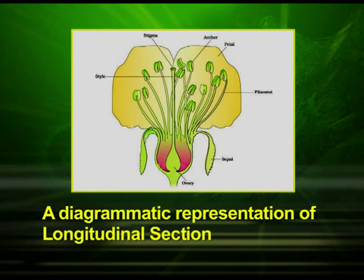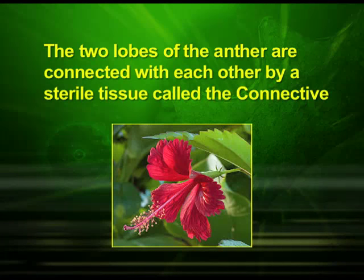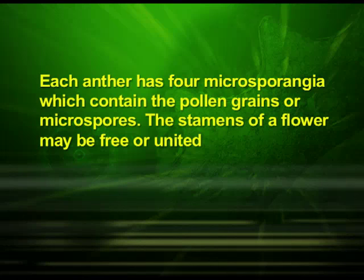In this diagram you can see the longitudinal section of a flower. Generally the androecium is the third inner whorl of a flower and is composed of stamens. Each stamen consists of a long and slender stalk called the filament, and the terminal generally bilobed structure is called the anther. Male gametes are produced in the pollen grains, which develop in the anther. The two lobes of the anther are connected by a sterile tissue called the connective. Each anther has four microsporangia which contain the pollen grains or microspores. The stamens of a flower may be free or united.